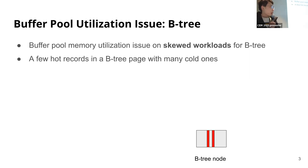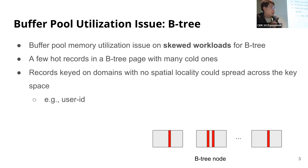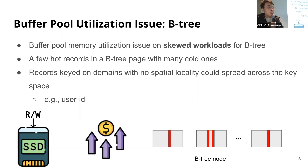In order to access those records, you need to keep the entire node in the buffer pool. Furthermore, if records are keyed on domains with no spatial locality — for example, user ID — these hot records could spread across the entire key space. This might result in very low main memory utilization, which either leads to more expensive IOs or leads to increased cost for needing a bigger buffer pool to meet a performance target.